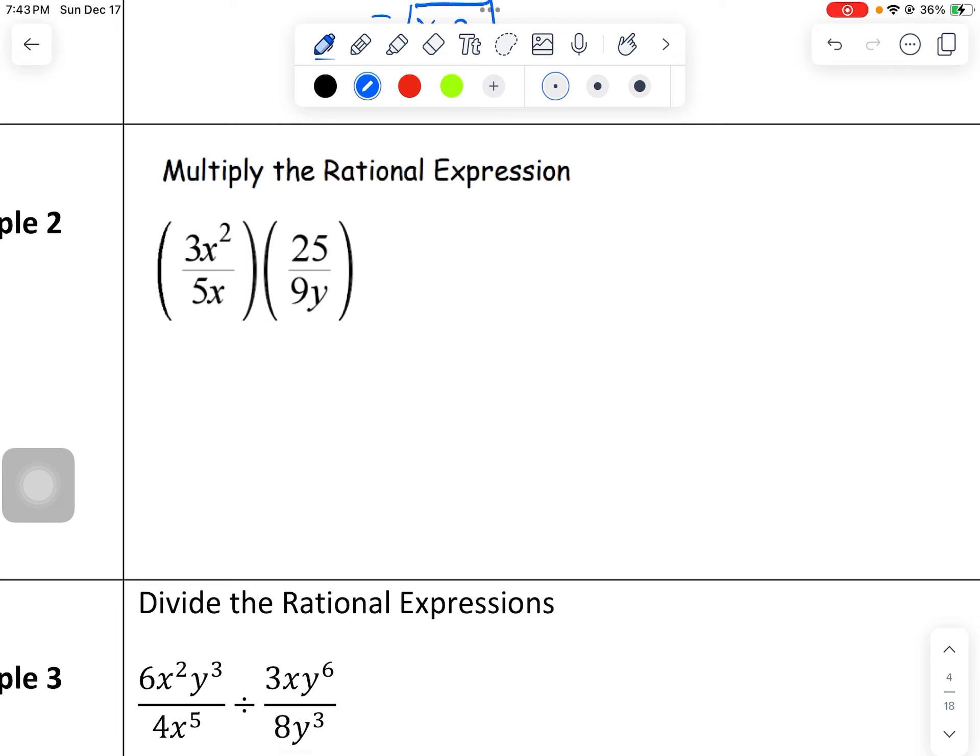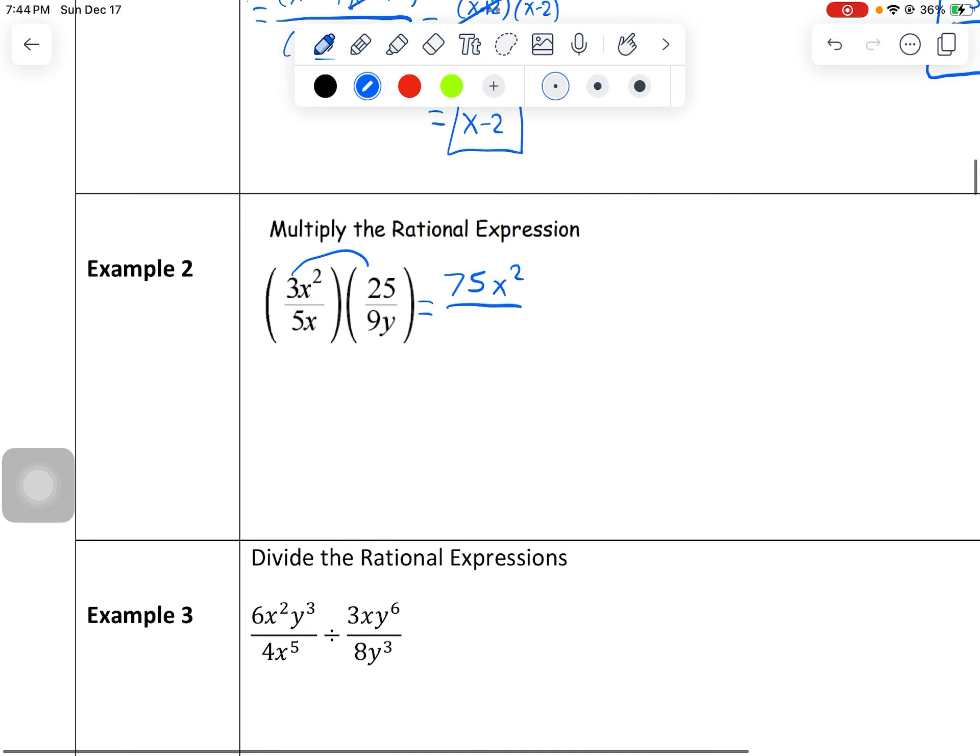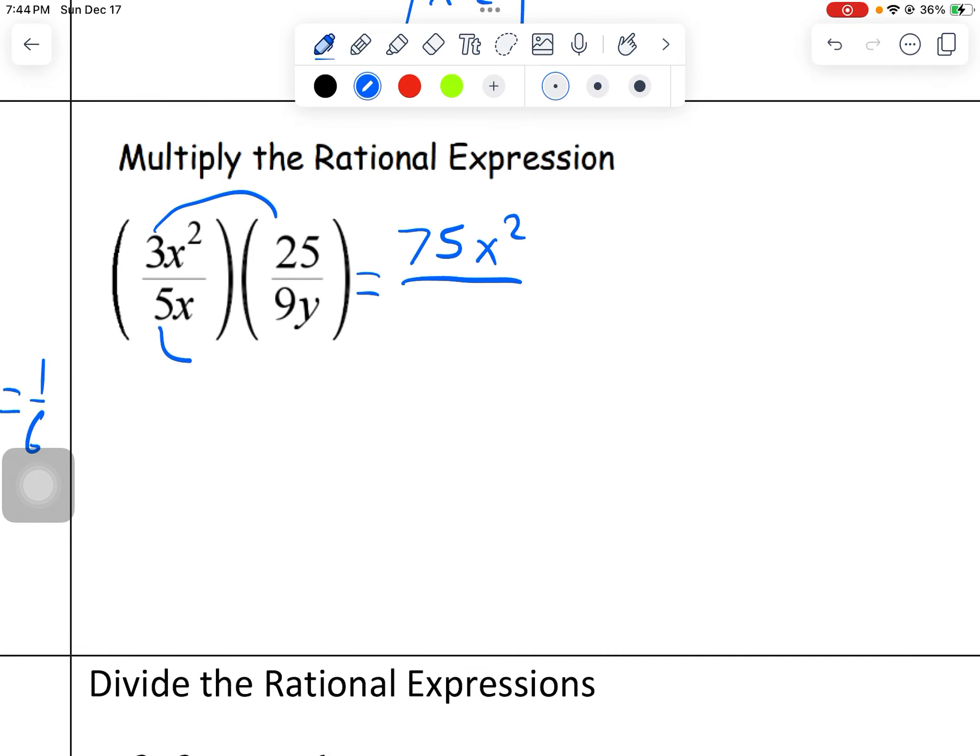On to multiplying the rational expression. There's kind of two ways to approach this. I would suggest multiplying out your top and your bottom before you try to simplify everything. So let's just do 3 times 25, which is 75, and then we would have x squared on the top. I probably should have reviewed this, but when you're multiplying fractions, if I have 1/4 times 2/3, it's top times top, bottom times bottom. So that's 2 over 12, which reduces to 1/6. So even after we multiply, we're going to be able to reduce.